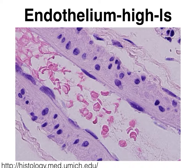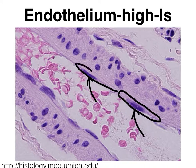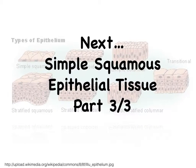And here, we see an even higher magnification. Once again, very nice flat nuclei that belong to flat cells, probably approximately like so. This wraps up our discussion of the endothelium. We have one more part that discusses the location of simple squamous epithelial tissue in the kidneys.